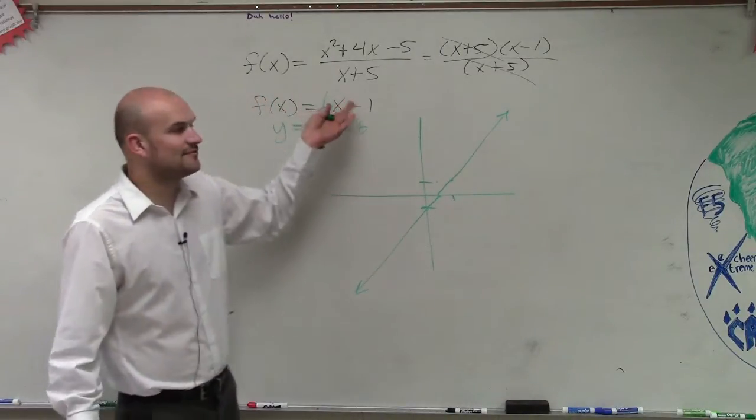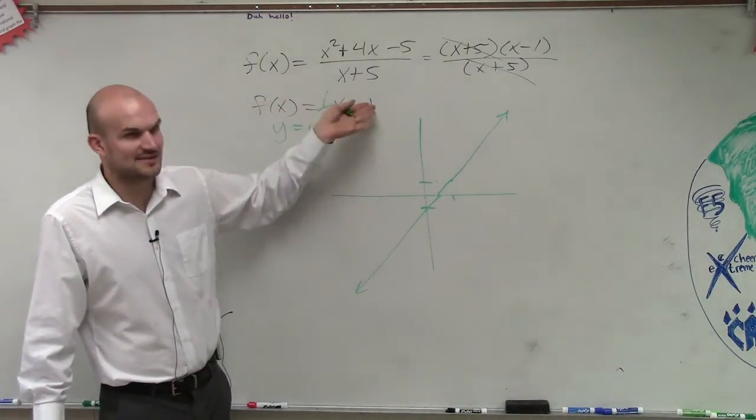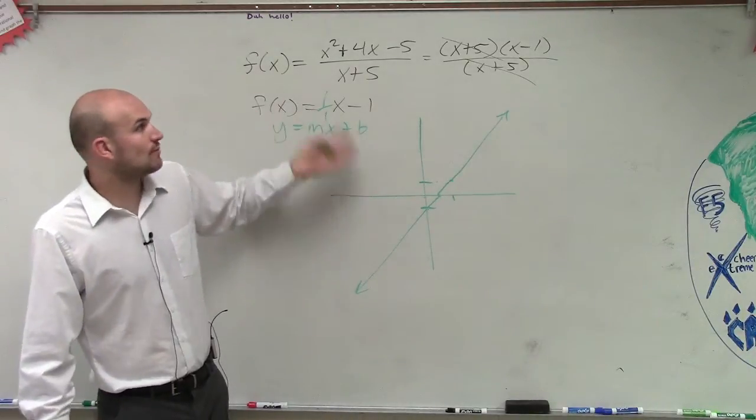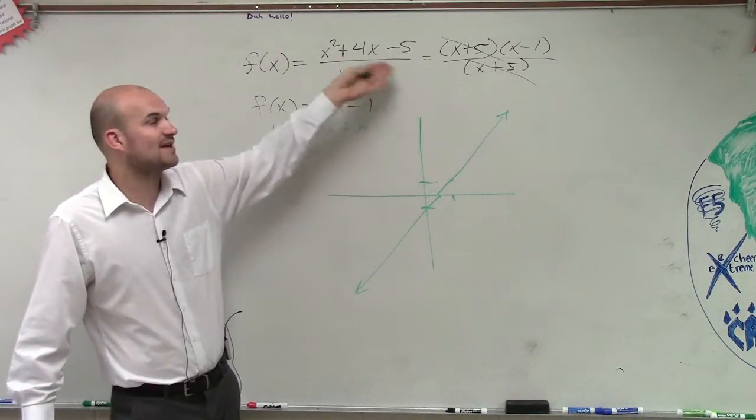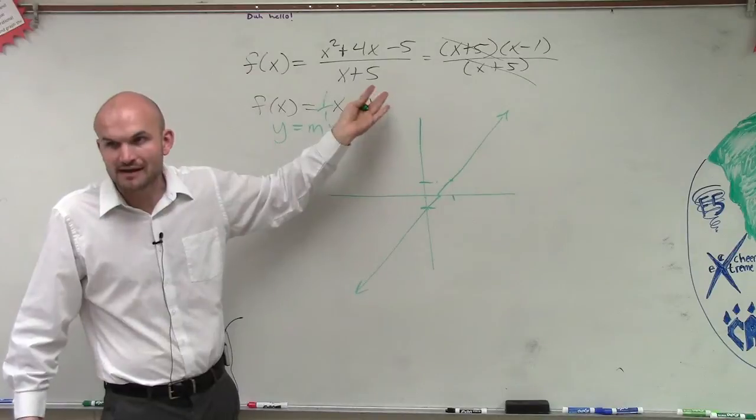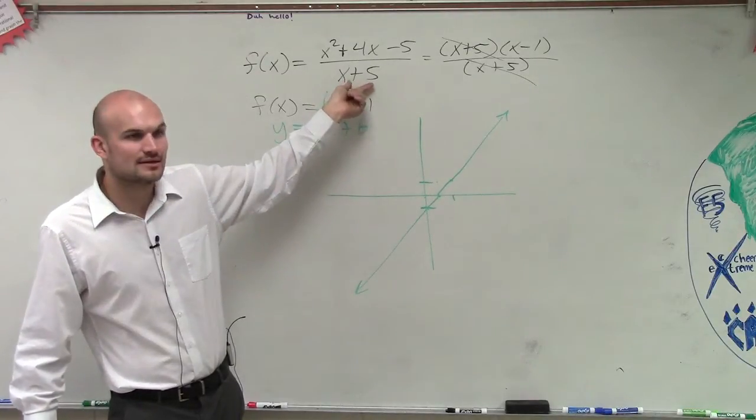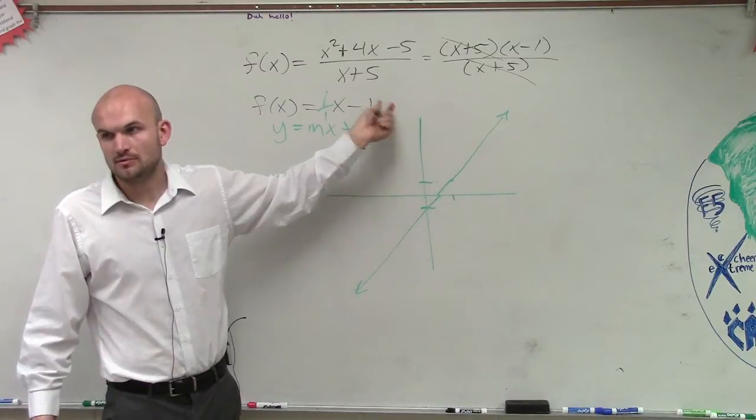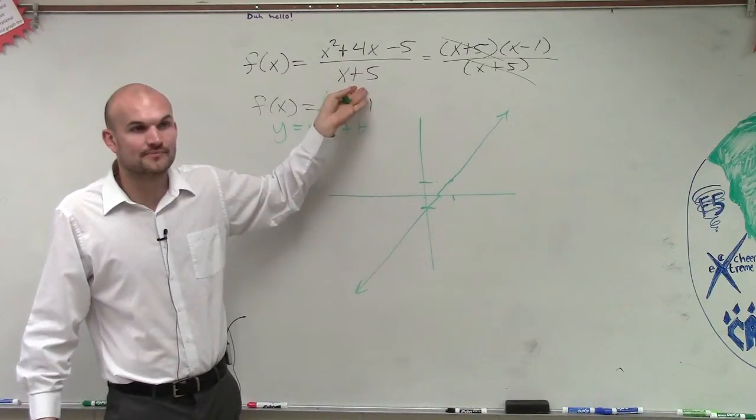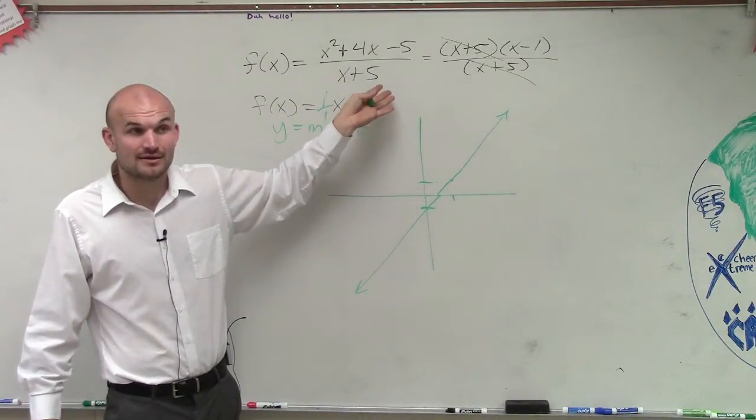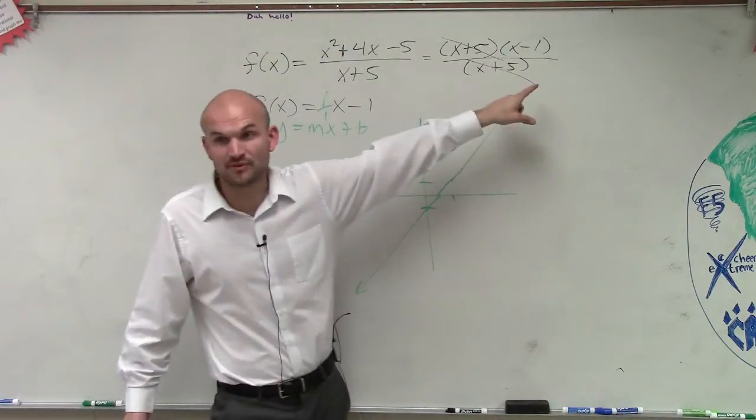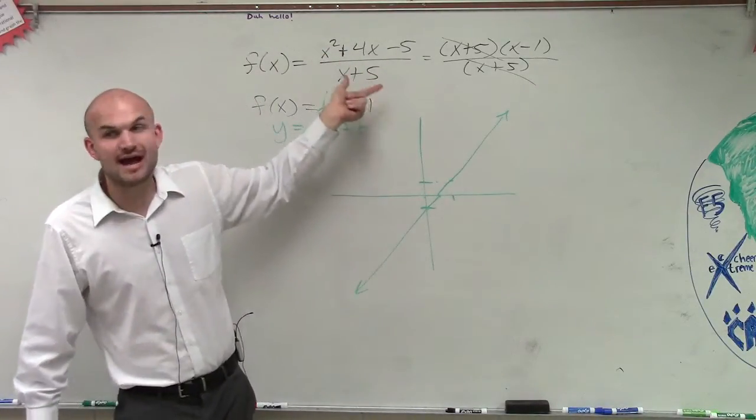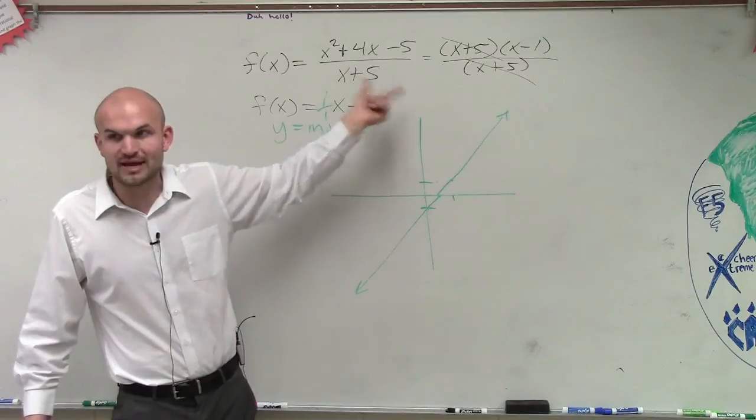However, the function that I asked you to graph was x squared plus 4x minus 5 divided by x plus 5. What is our value in this function that x cannot equal? Negative 5. Even though this function, even when we simplify it, we still know as I have this written, x cannot equal negative 5.